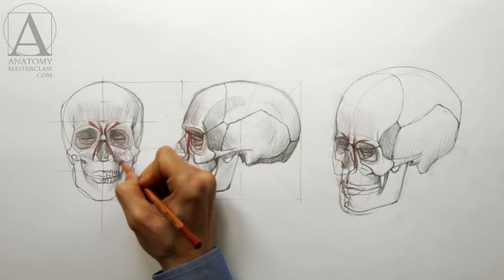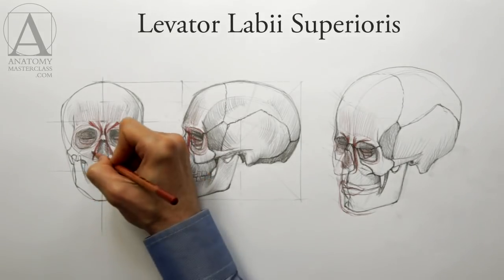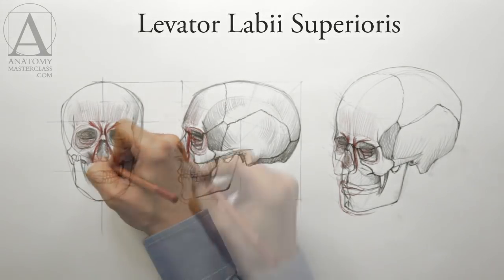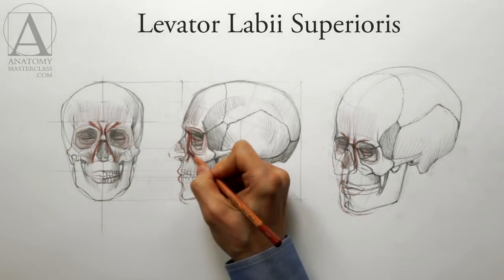On both sides of the nose is a pair of muscles that elevates the upper lip. These muscles can work together to lift the entire upper lip, or separately, lifting only one side at a time.